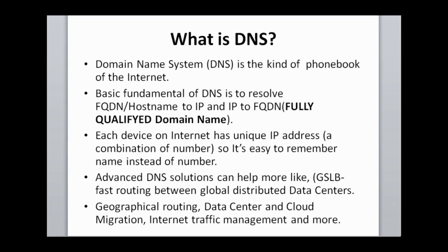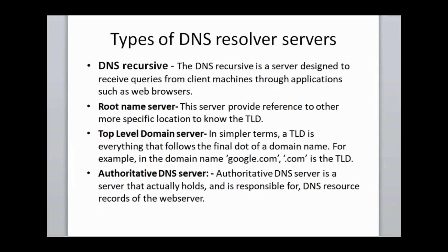Advanced DNS also provides more solutions. For example, GSLB — Global Server Load Balancing — is used for fast routing between globally distributed data centers. DNS also provides geographical routing, data center and cloud migration, and internet traffic management. Now let's discuss about the four types of DNS resolvers.